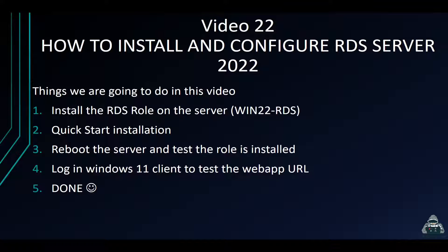Welcome back to another video. This is video 22 in the series, a video on how to install and configure RDS server, also known as Remote Desktop Services server. We're going to be installing this role on this machine, WIN22RDS — I already built it out and joined it to the domain. We'll do a quick start install, reboot a few times, then test the web app, the RDP app, and remote into the server from our Windows 11 machine.